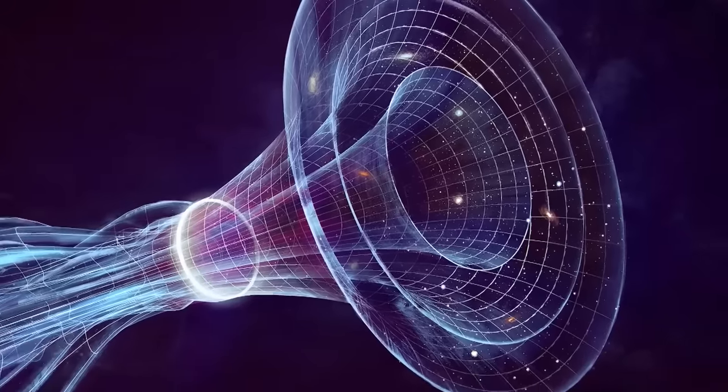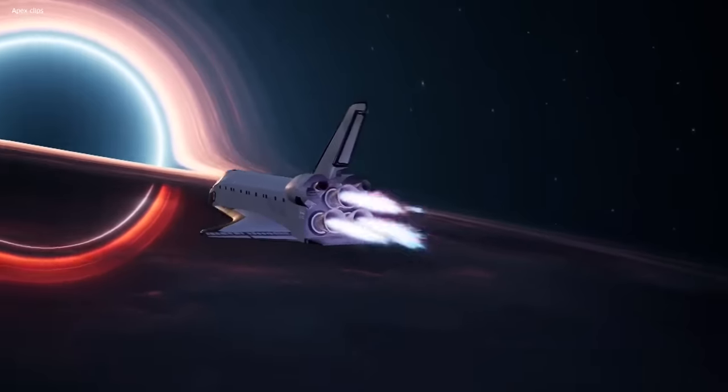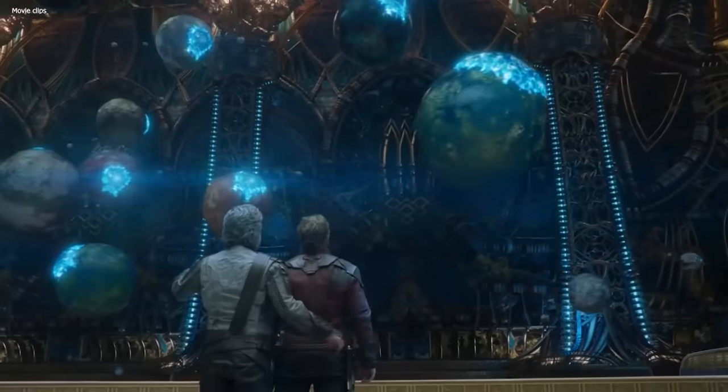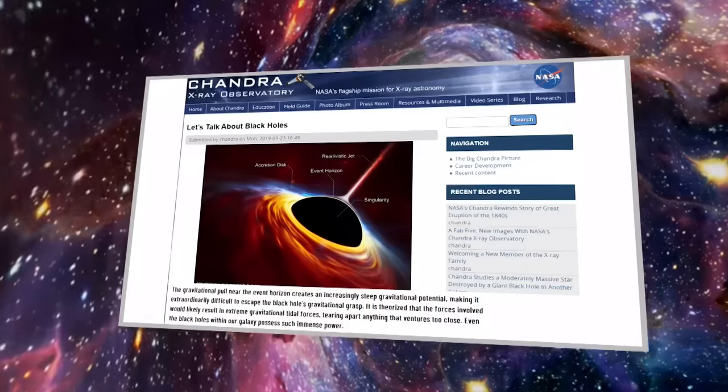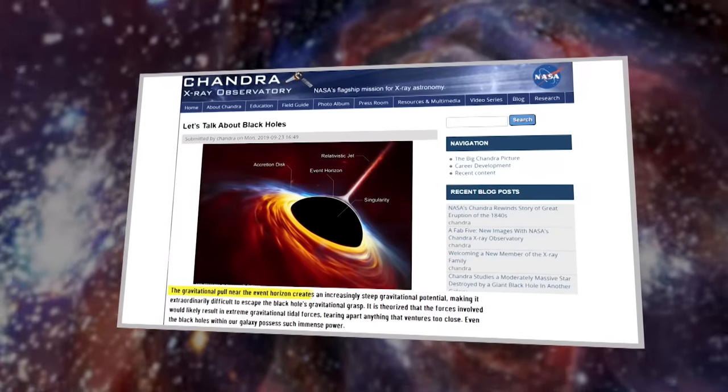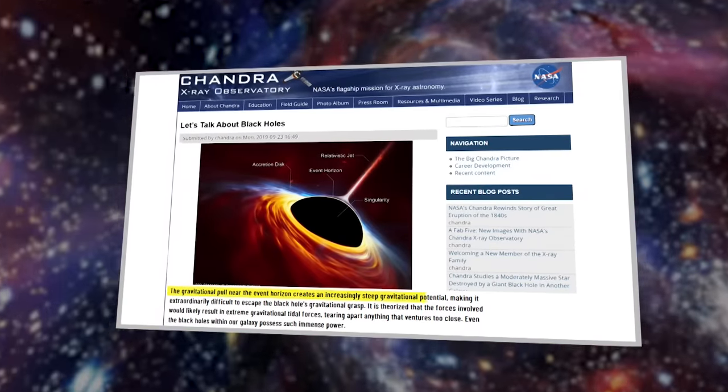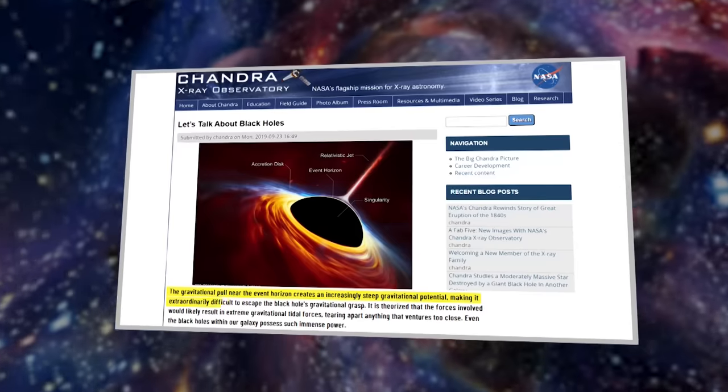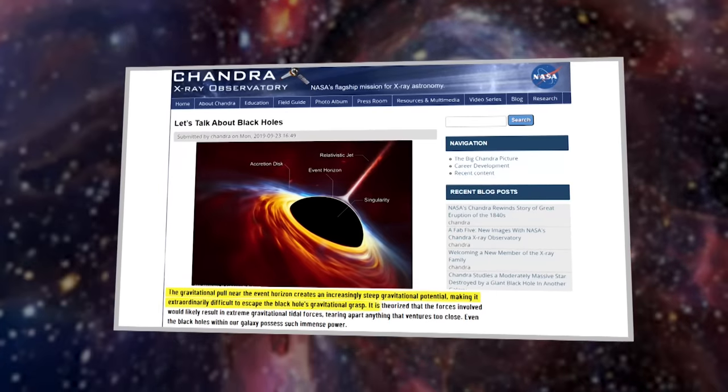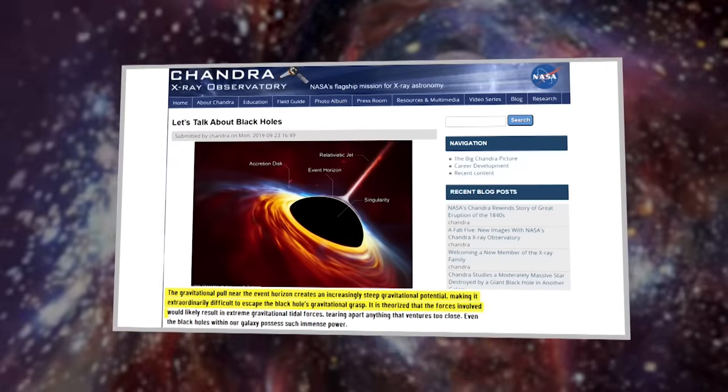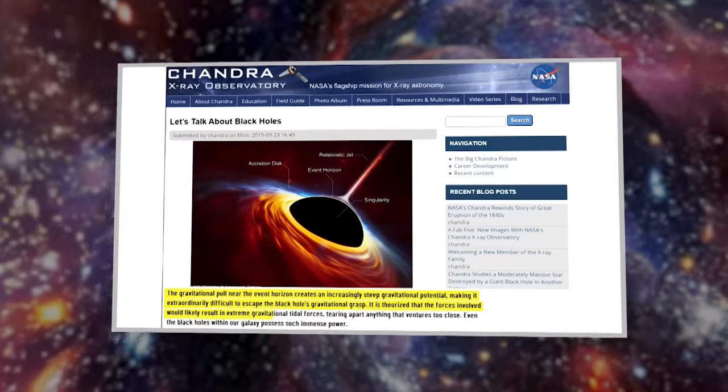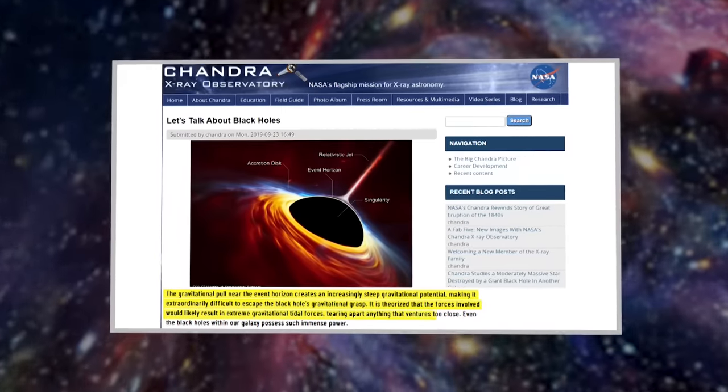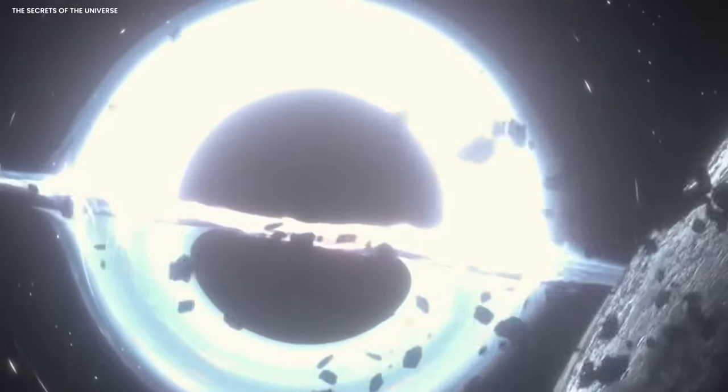It's crucial to emphasize that venturing beyond the event horizon, the point of no return surrounding a black hole, carries severe consequences. The gravitational pull near the event horizon creates an increasingly steep gravitational potential, making it extraordinarily difficult to escape the black hole's gravitational grasp. It is theorized that the immense forces involved would likely result in extreme gravitational tidal forces, tearing apart anything that ventures too close. Even the black holes within our galaxy possess such immense power.